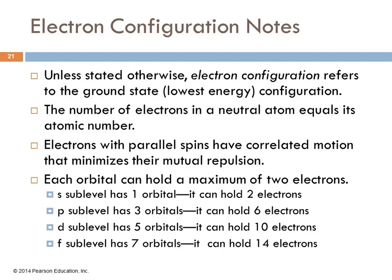So just some notes about electron configurations. Unless the question says otherwise, we assume that the electron configuration is the ground state, the lowest energy state. Sometimes they'll say is this an excited state? But most of the time we're talking about the ground state. The number of electrons in a neutral atom equals its atomic number. So we look at lithium on the periodic table. It's atomic number three. That means it has three protons and three electrons for a neutral atom. If we have ions, then the electrons are going to be different based on the charge.